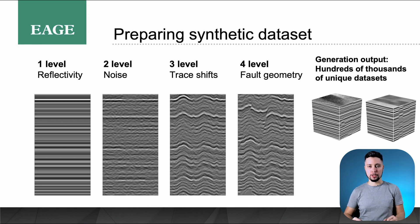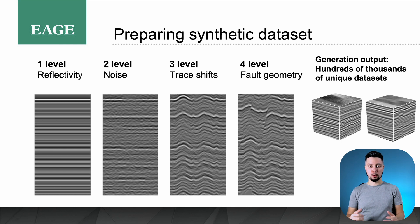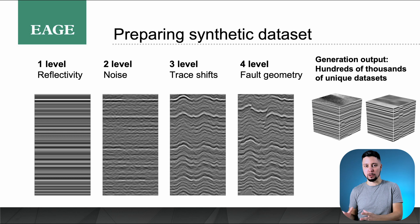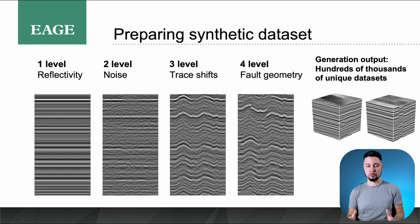Generally, any situation can be approximated with synthetic data. We understand the data distribution can differ from real datasets, but we can deal with that. Our synthetic generation workflow consists of several stages: we define a reflectivity model, apply forward modeling, and then add noise so it looks like real seismic images — this is how we bring our distribution closer to the real one. As a result, we have hundreds of thousands of unique samples with clear fault definitions and without any subjective labeling bias.